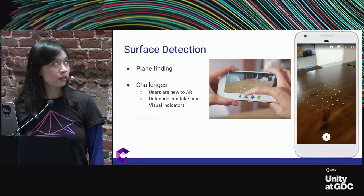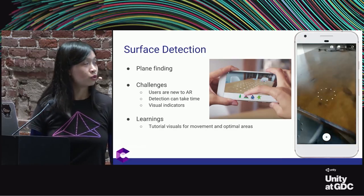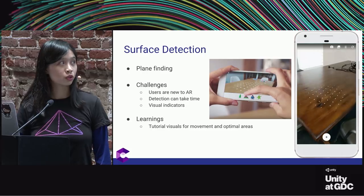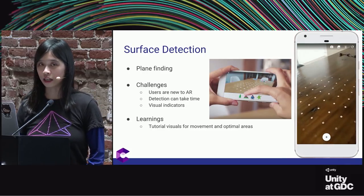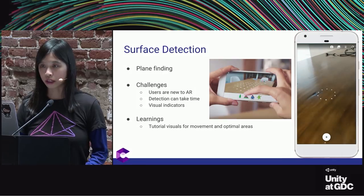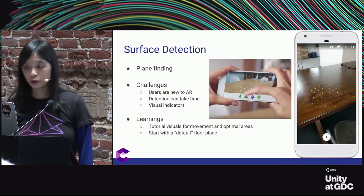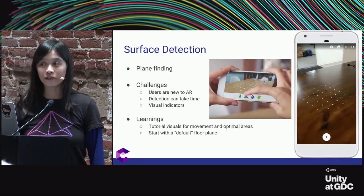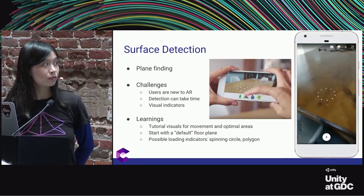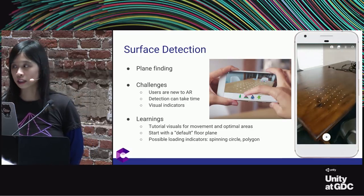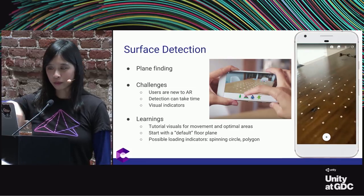To summarize our learnings on surface detection: use tutorial visuals for movement and optimal areas to scan, so users know not to scan glossy surfaces or white walls. You may consider starting with a default floor plane and potentially having loading indicators, like a spinning circle or a loading polygon.